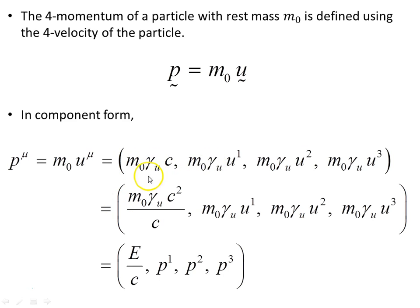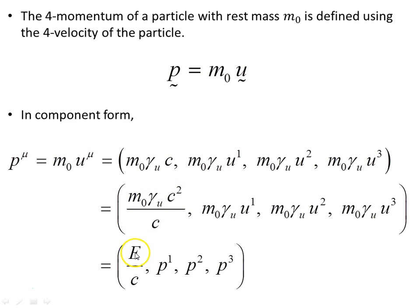We can rewrite the first component as m₀ gamma_u times c squared over c, which gives us the energy of the particle over c, and then we have the three spatial components of momentum.